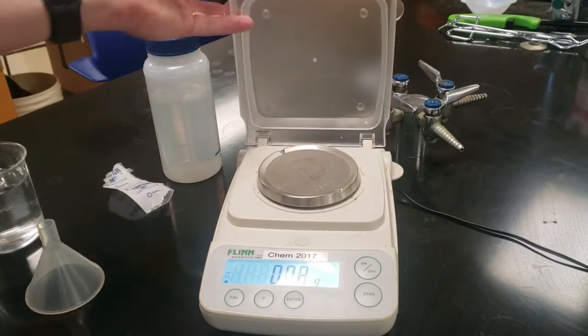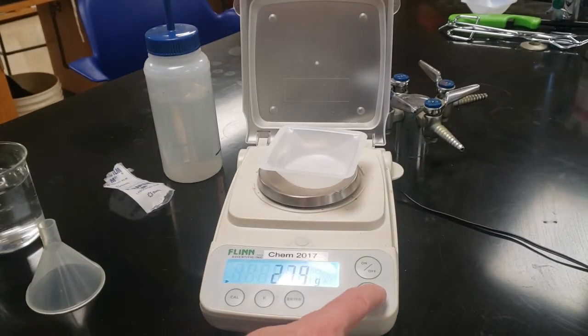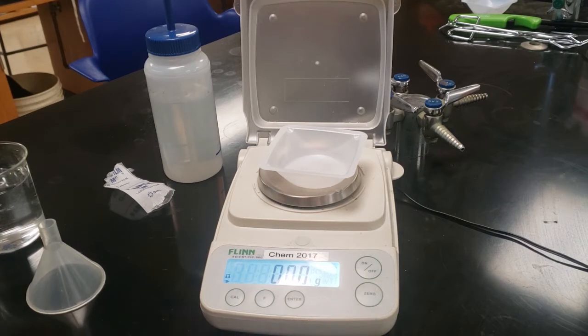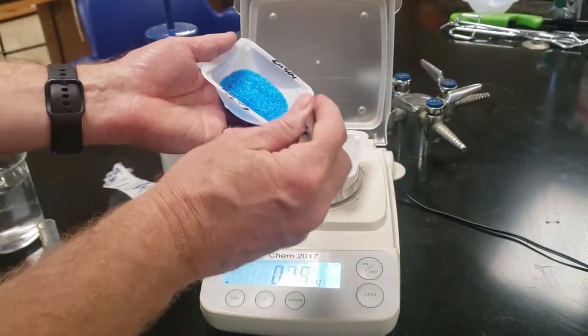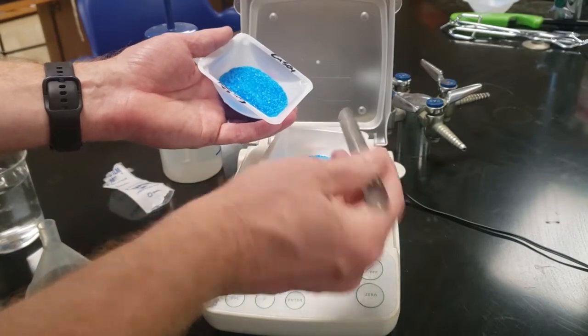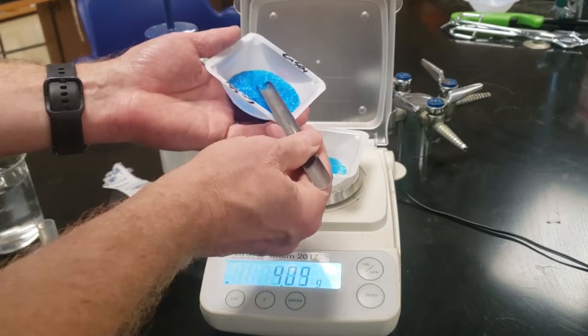Here we're going to lift the lid up. Put the weighing boat on there. Push tare or zero and it makes it zeroed out so that it doesn't weigh the actual boat. It starts from whatever you put on top of that. We're going to put this right on top of it because you guys will spill it. And if you spill it, it goes right in there.